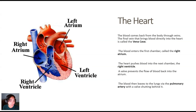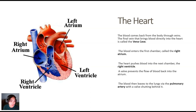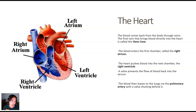This is the final vein that brings blood directly into the heart — it's called the vena cava. The vena cava enters into our right atrium, which is our first chamber. The heart then pushes the blood into the next chamber, which is our right ventricle. There's a valve that prevents the blood flowing back into the atrium. Then the blood leaves and flows into the pulmonary artery, with a valve stopping it from coming back.